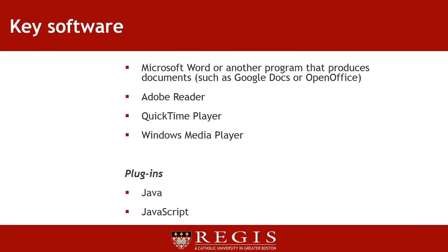Your computer will also need the following software and freeware installments: Microsoft Word or another program that produces documents such as Google Docs or OpenOffice, Adobe Reader, QuickTime Player, and Windows Media Player. In addition, the following plugins are needed: Java and JavaScript.